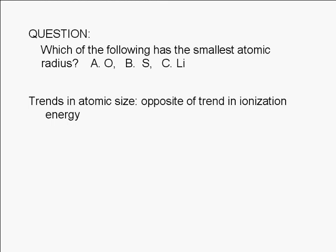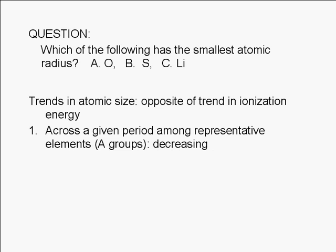The trend in atomic size is opposite that of the trend in ionization energy. The observed general trend is that it decreases as you go from left to right across any given period.